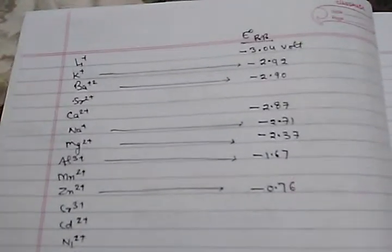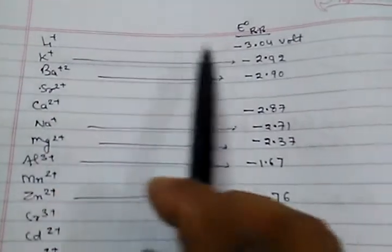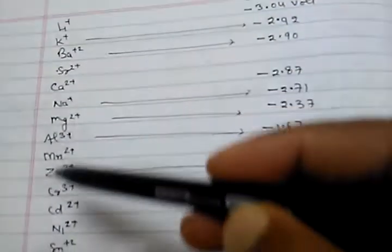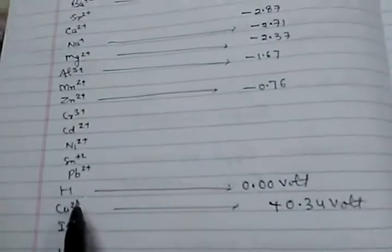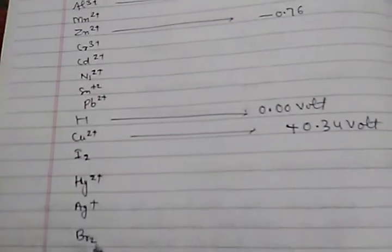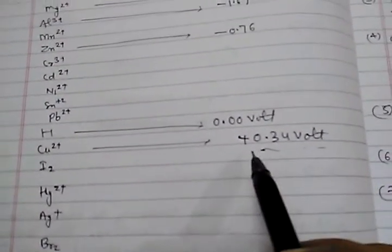Based on standard reduction potential, different elements have been arranged. For example, lithium's standard potential is minus 3.04 volt, potassium's is minus 2.92 volt, and so on. The standard reduction potential of hydrogen is 0.00 volt. Elements arranged below hydrogen have positive standard reduction potential — for example, copper at plus 0.34 volt.